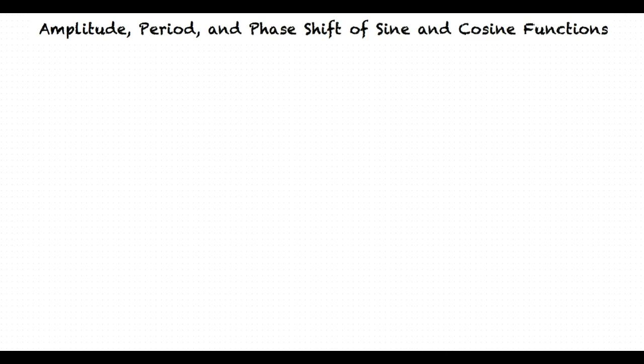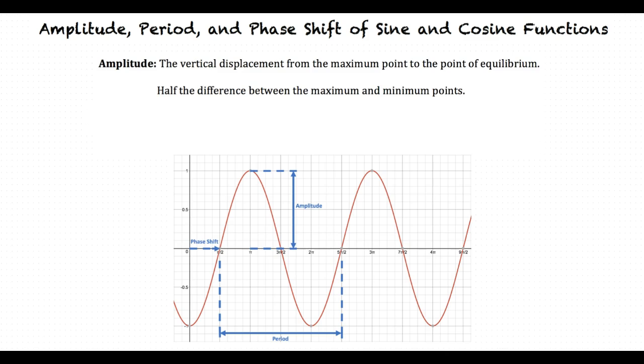What is amplitude, period, and phase shift? Good question. Let's define amplitude, period, and phase shift. The amplitude is the vertical displacement from the maximum point to the point of equilibrium. In other words, half the difference between the maximum and minimum points.